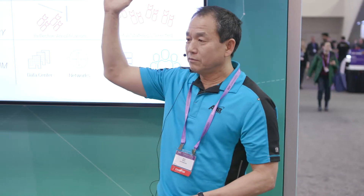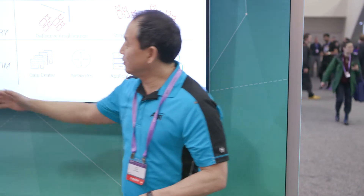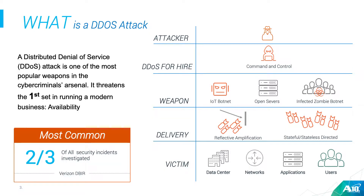Interestingly, Verizon's DBIR — their annual report where their forensics team analyzes incidents across the whole year — found that two thirds of all incidents investigated from their enterprise customers were DDoS-related. Pretty striking how serious the problem really is.